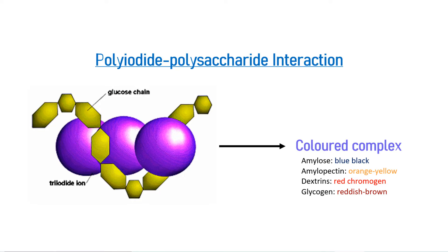The iodine test is based on the principle that polyiodide ions — mainly the tri-iodide ions present in iodine solution — form colored adsorption complexes with the helical chains of glucose residues of certain polysaccharides. The tri-iodide and penta-iodide ions formed are linear and slip inside the helix structures, which then produces visual colors upon contact with these polysaccharide molecules. The amylose component in starches is responsible for the formation of a deep blue or blue-black color in the presence of iodine, while amylopectin produces an orange-yellow hue.